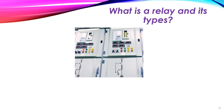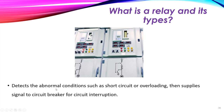In this lecture we discuss the relay and its types. The relay is used to detect abnormal conditions such as short circuit or overloading, then supplies a signal to the circuit breaker for circuit interruption. The relay acts as the brain in the protection system — it takes a signal from the current transformer, and if the current exceeds a certain limit or abnormal conditions such as overcurrent, overvoltage, over-frequency, or under-frequency are detected, it provides a signal to the circuit breaker, which acts as the muscles to open the circuit.